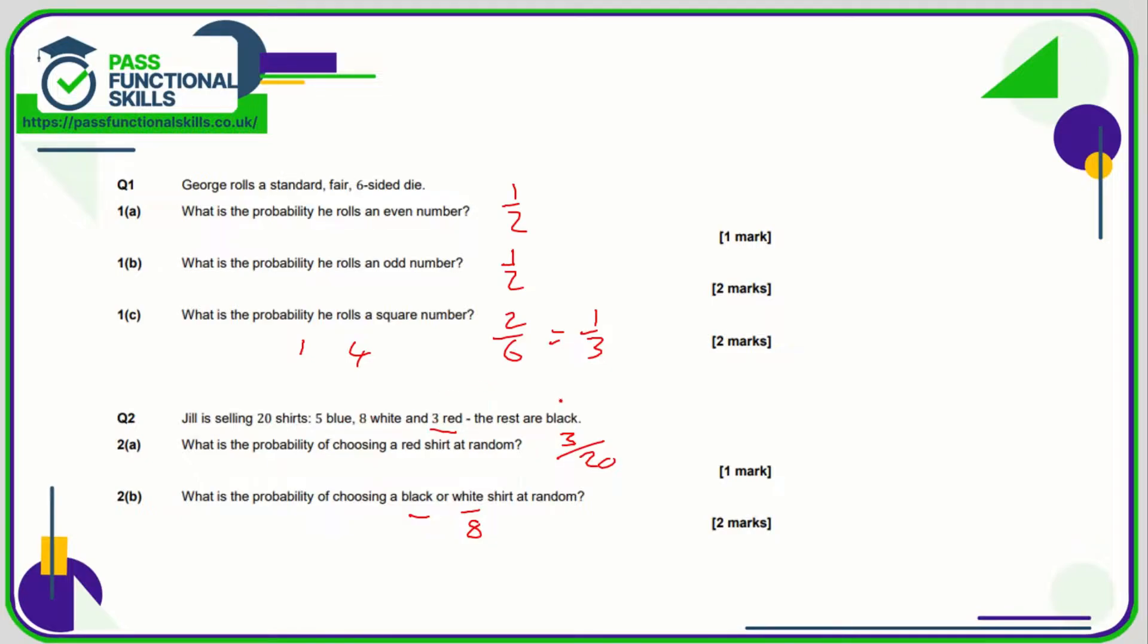5 is 16, so therefore 4 must be black. So black or white means there are 12 that are black or white, so that is going to be 12 out of the 20, which can be simplified to 6 out of 10 and 3 out of 5, but 12 out of 20 is fine.